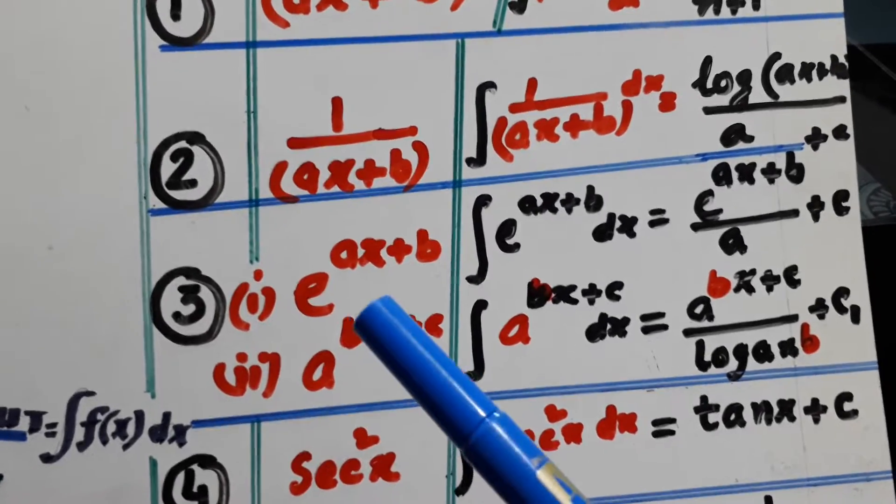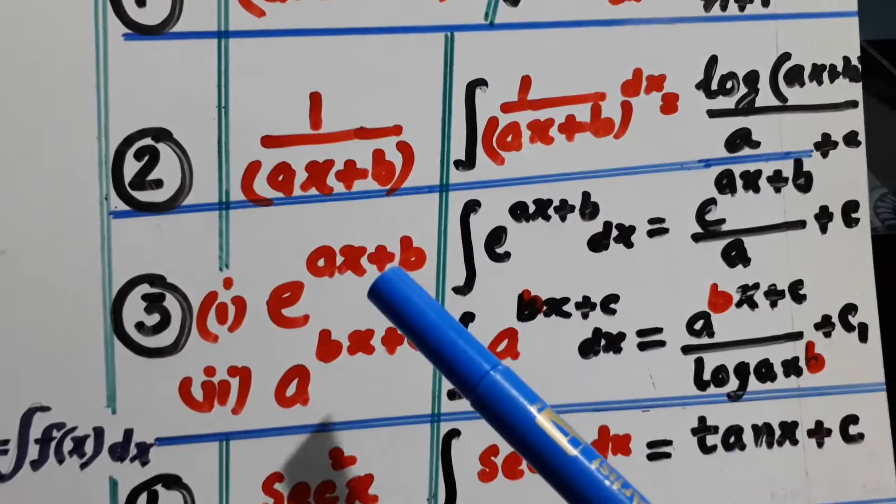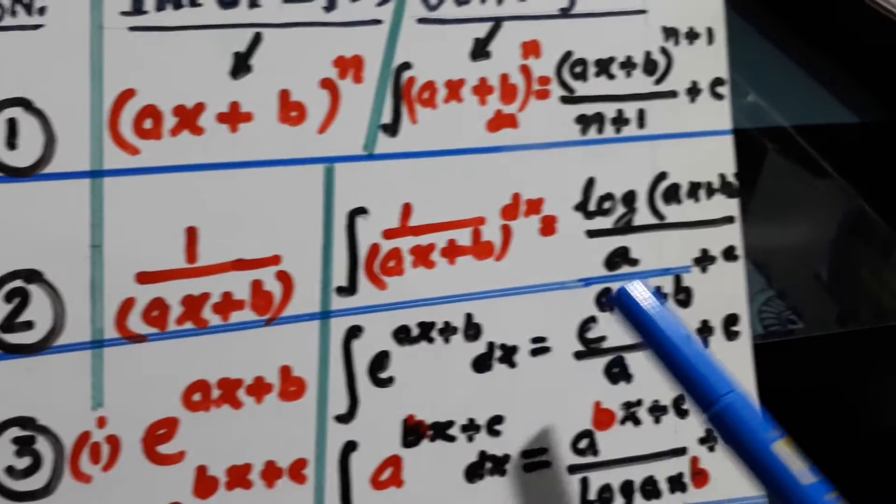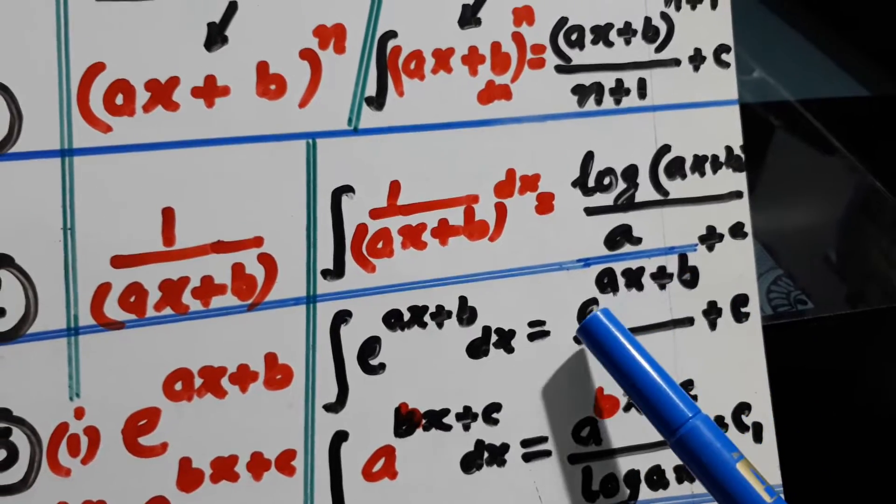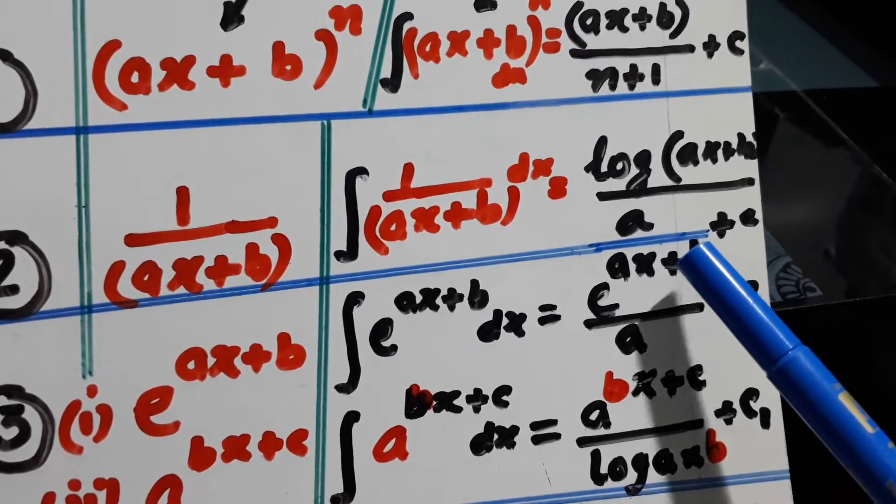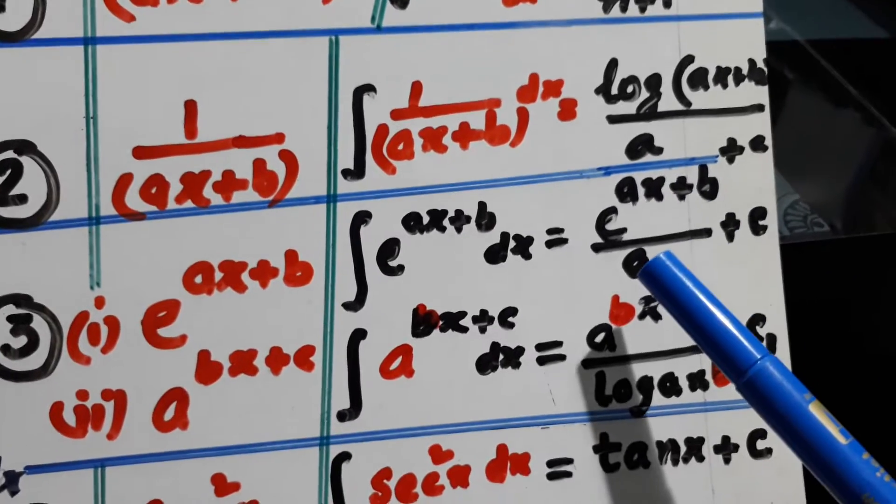Now, third example is, number one: e^(ax+b). This is the input going into the machine. This is the output: integration of e^(ax+b). It is e^(ax+b) over a, where a is the derivative of (ax+b). We have to write it in the denominator.